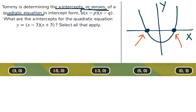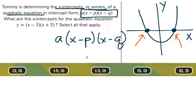And this is that intercept form, which is going to be really handy. It's a times x minus p, x minus q. Now what do these parts mean? Well the p and the q are the intercepts that we're looking for here.